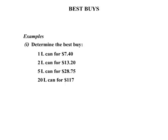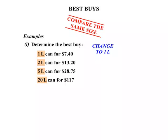In this lesson we are looking at Best Buys. We are asked to determine the Best Buy. We have four different cans: a 1L can for $7.40, a 2L can for $13.20, a 5L can for $28.75, and a 20L can for $117. We need to compare them at the same size before we can determine the Best Buy. So what we are going to do is break them down and change them all to 1L, then we can compare them properly.